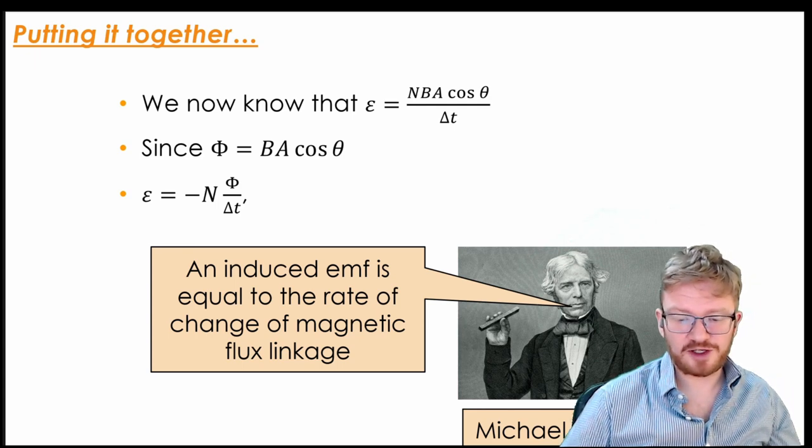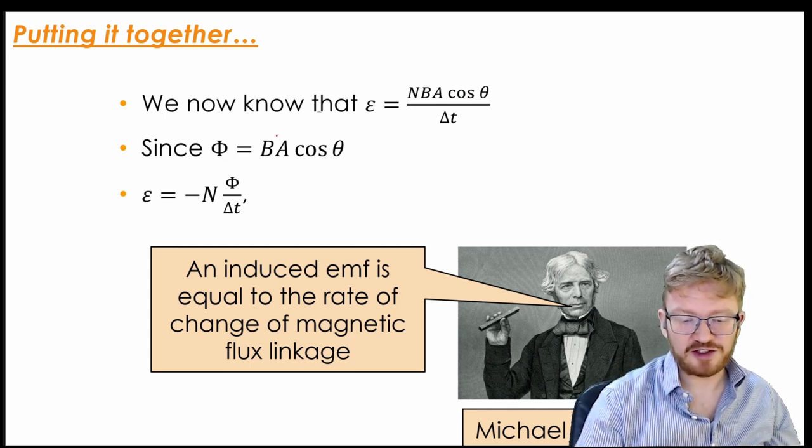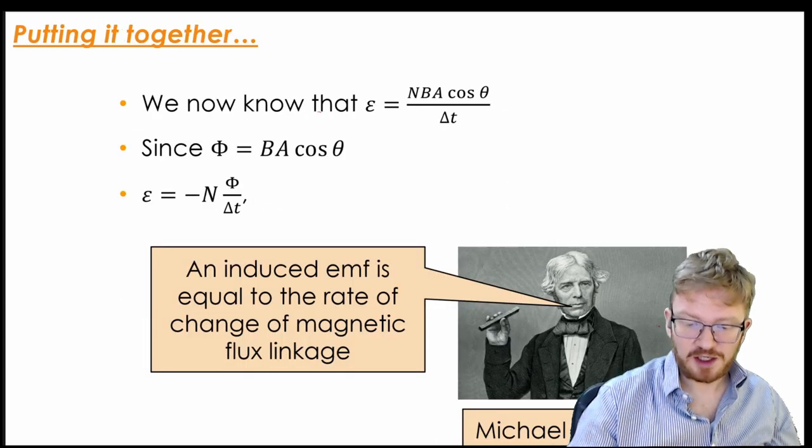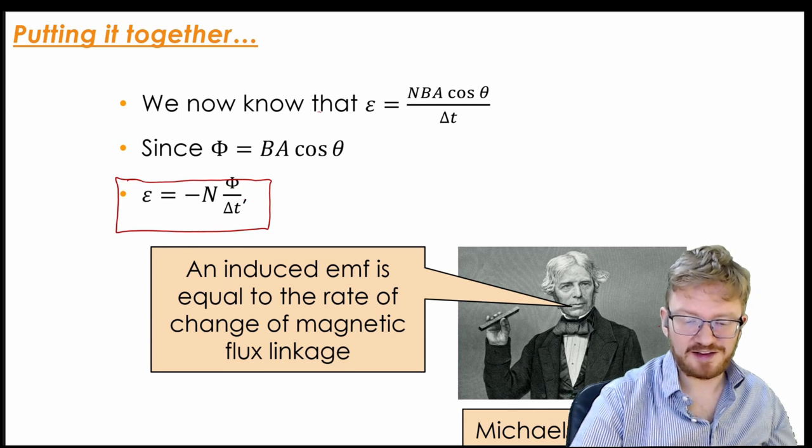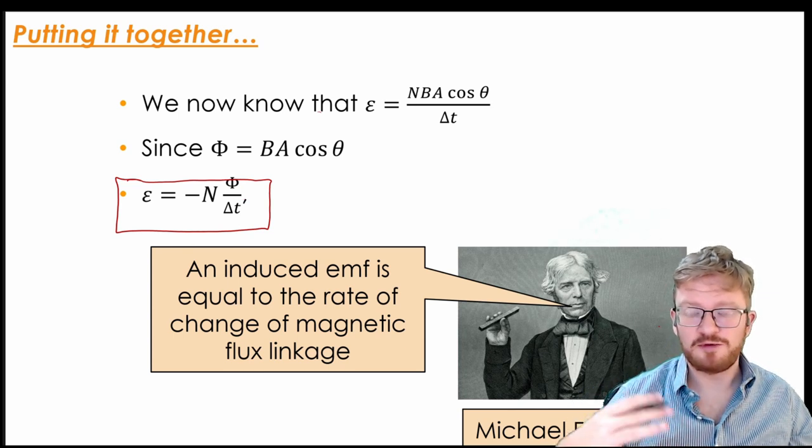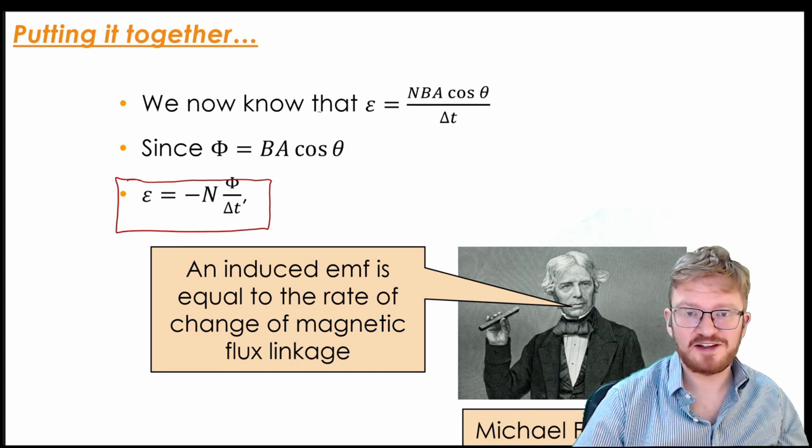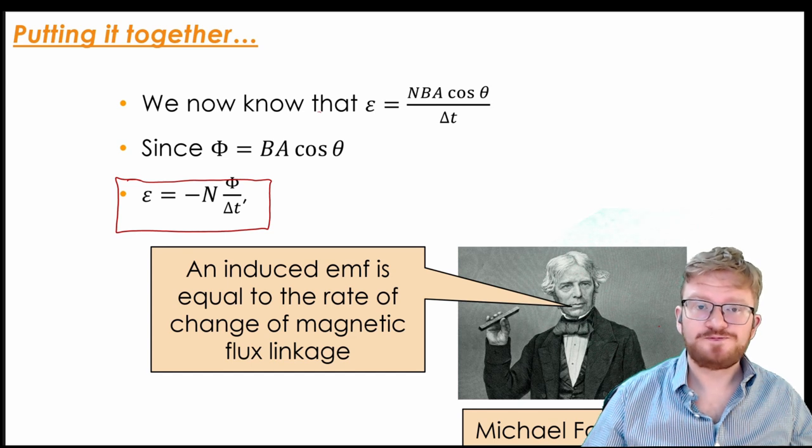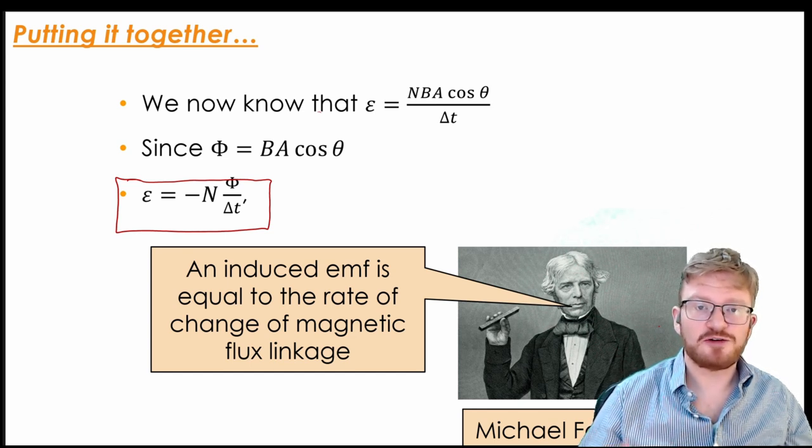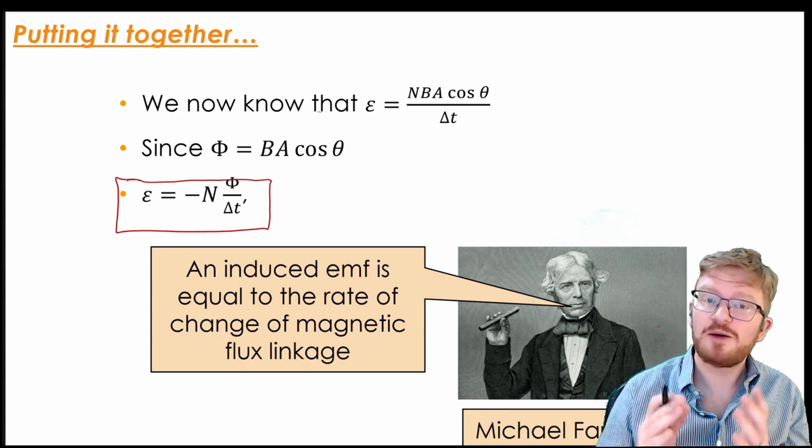Okay, so let's try and put together two different things. So we've already worked out that EMF must be NBA cos theta. Now, since we know that the flux linkage will be BA cos theta, that's what we found earlier, what I can say is that the induced EMF is equal to n d phi by dt. So we would write that as Faraday's law. And when we're writing Faraday's law, we can say an induced EMF is equal to the rate of change of magnetic flux linkage. And that encapsulates most of what we already know about magnetism. We know that if I spin a coil faster, it will generate a bigger EMF. We know that if I have a stronger magnetic field, I'll have a bigger EMF. The new thing we've also learned is if I just have a physically bigger coil, I will also get a bigger EMF.